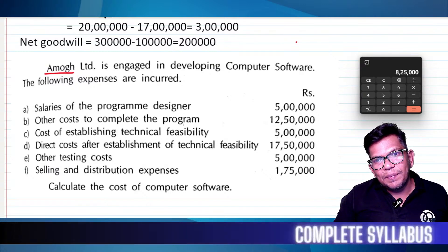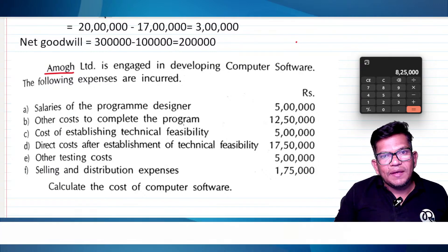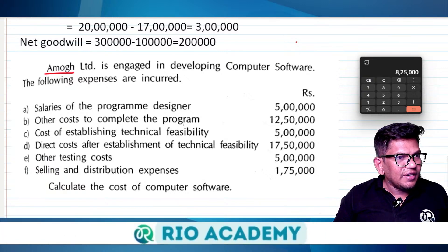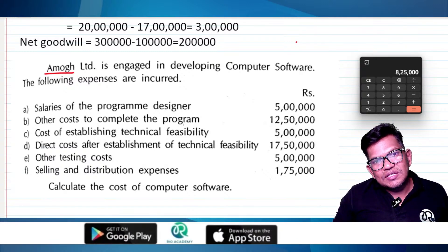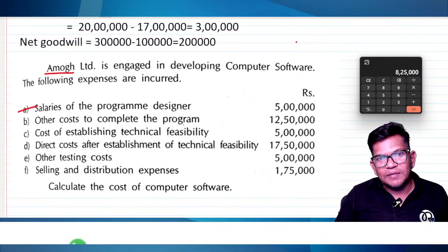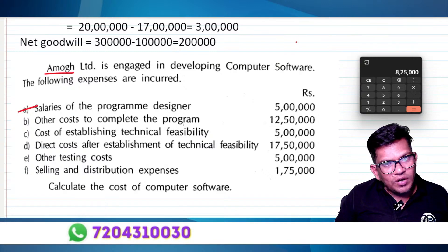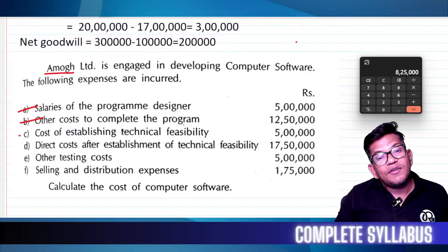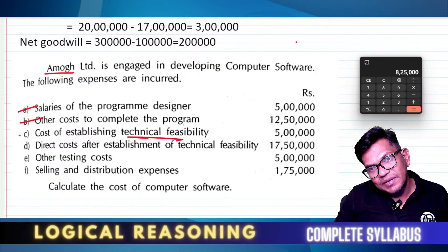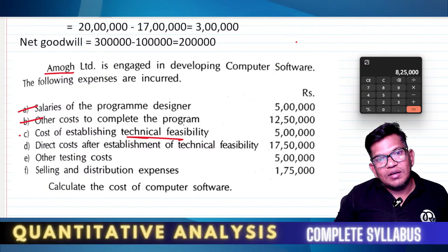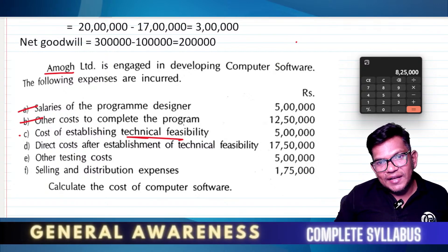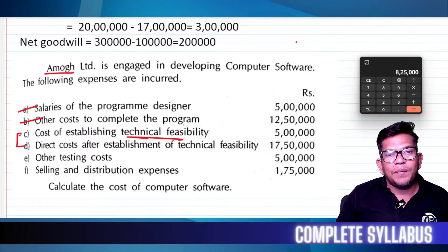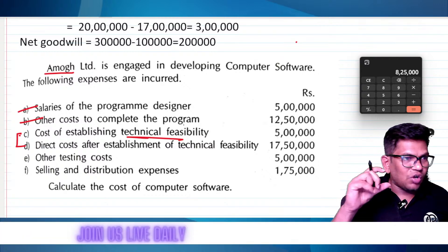Among limited engagement development of computer software, the following expenses are incurred: salary to staff, other expenses, cost of completing the program, and cost of establishing technical feasibility. Direct cost after establishment is also relevant. This is very important because this determines the exact cost that qualifies for capitalization.